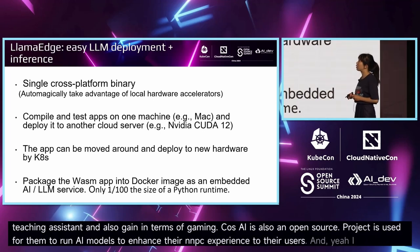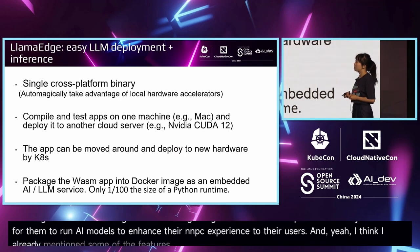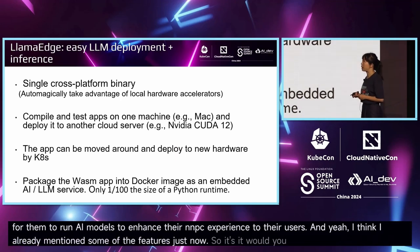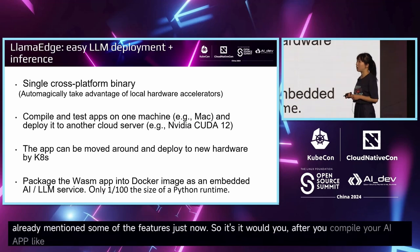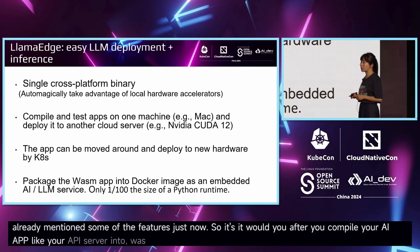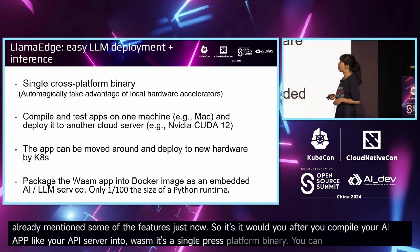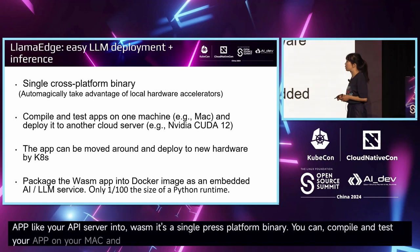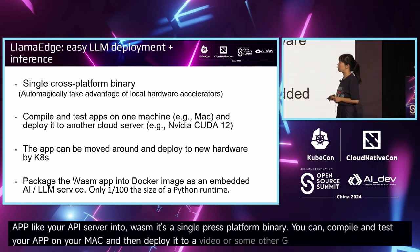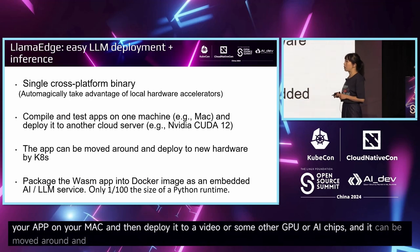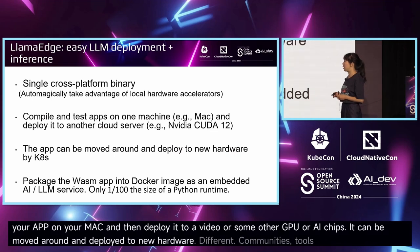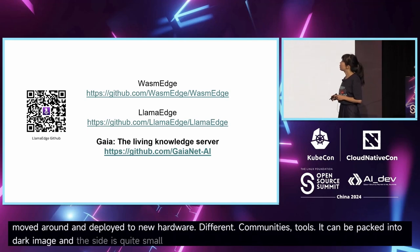After you compile your AI app — like your API server — into Wasm, it becomes a single cross-platform binary. You can compile and test your app on your Mac and then deploy it to NVIDIA or other GPUs or edge chips. It can be moved around and deployed to new hardware by different community tools, and it can be packed into a Docker image with a quite small size.